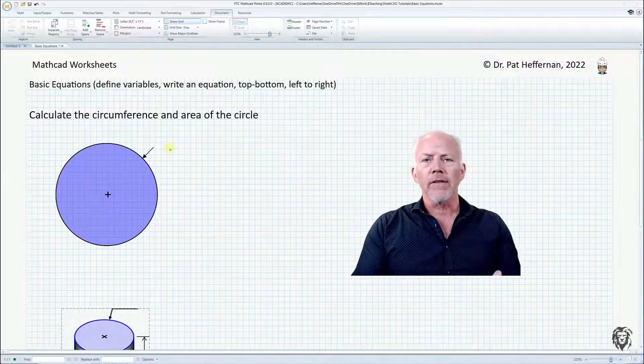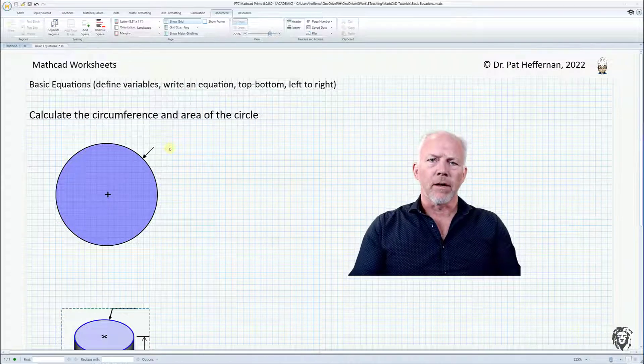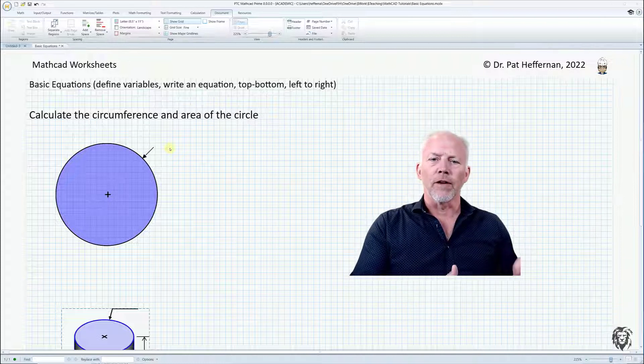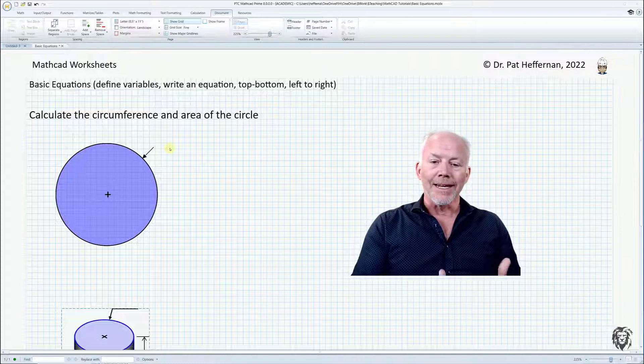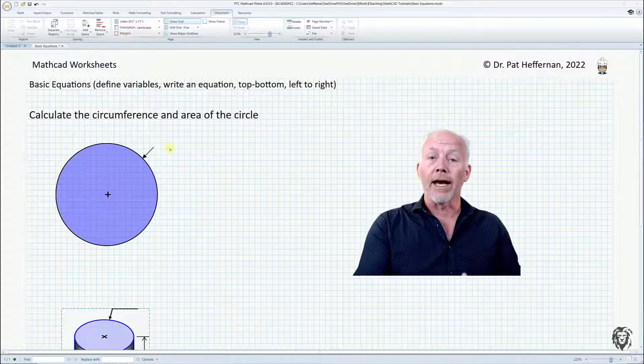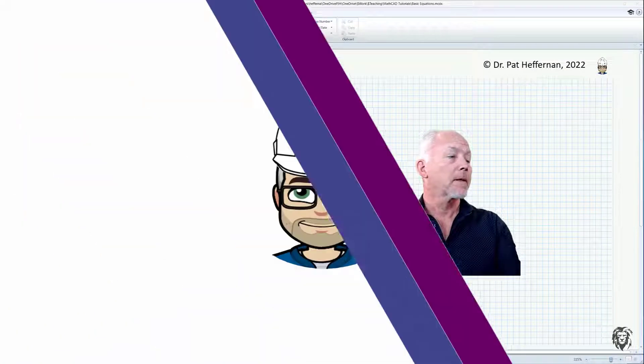The first thing you have to understand about variables and variable definitions is that MathCAD works top to bottom, left to right. If you're going to use a variable, it needs to be defined before you can use it. It will look for that top to bottom, left to right. So let's see what we mean.